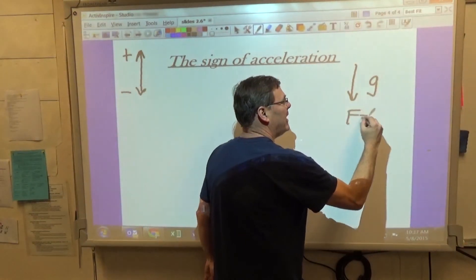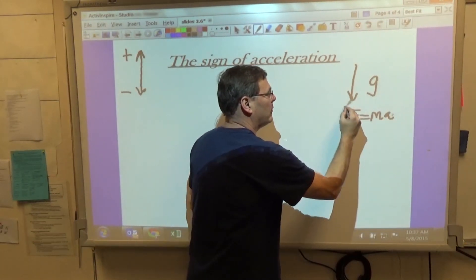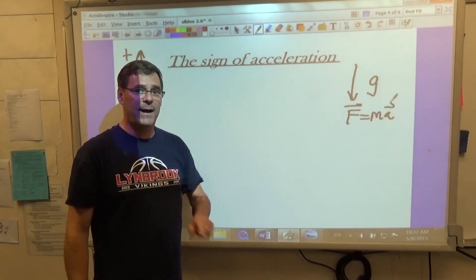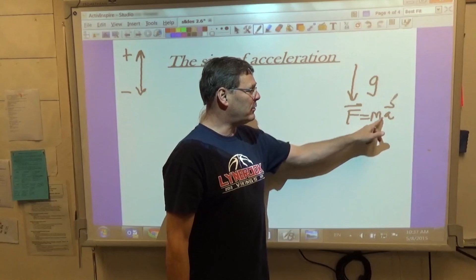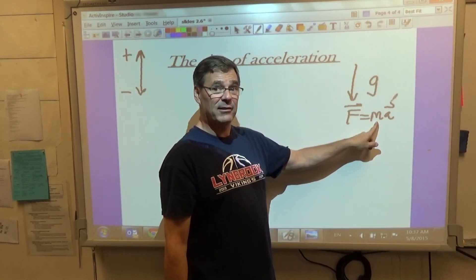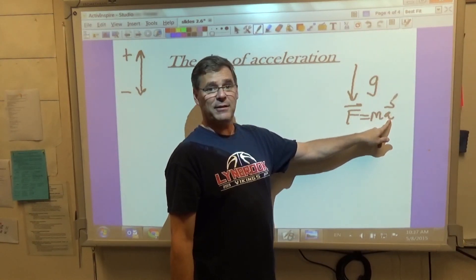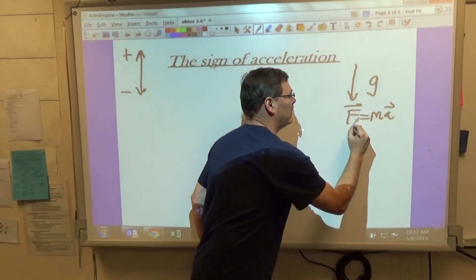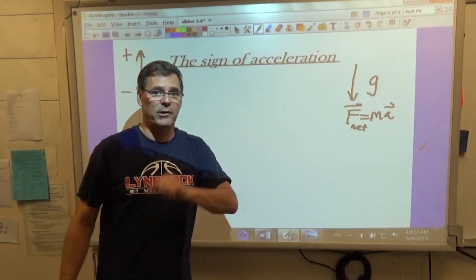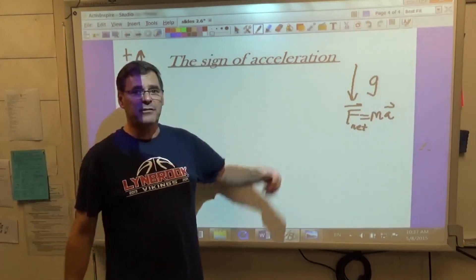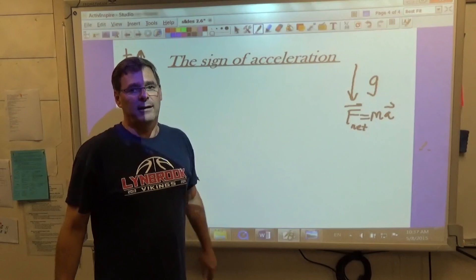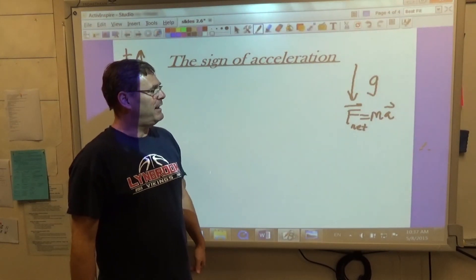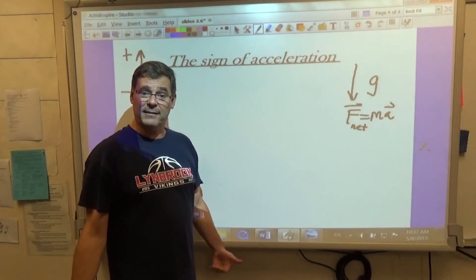F equals MA. Force and acceleration are vectors. They have magnitude and direction. And since they're equal by a factor of a scalar, the direction of acceleration is always in the same direction as the net force that causes it. So if an object is freely falling through the air, in this example, there's only one force. The net force acting on the object is gravity, and that is the weight of the object.